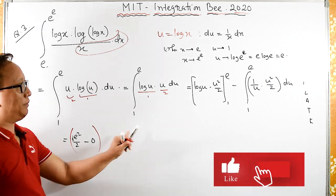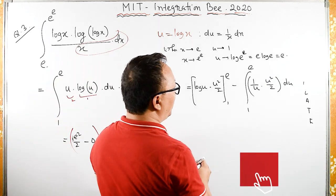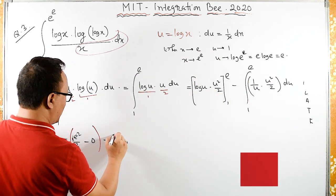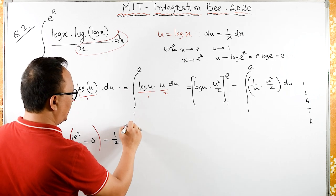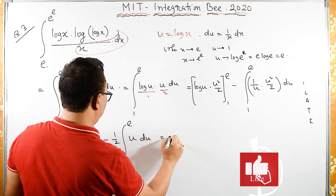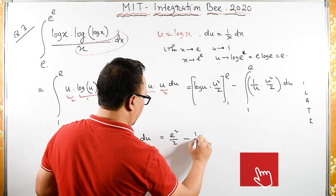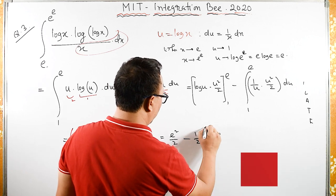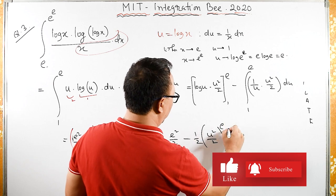For the second term, u and u cancel, leaving one u. Taking half outside: half integral of u from 1 to e du equals e squared upon 2 minus half times u squared upon 2, limit 1 to e.